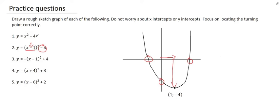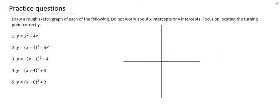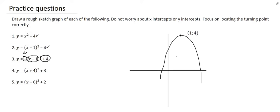For number three, we can analyze the various parts of that equation. We now see that it's a negative, meaning it's going to be an upside-down parabola. It's been shifted one unit to the right because it says minus 1, which means to the right, and it's been shifted four units upwards. We can locate the turning point by moving one place to the right and four units up. There we can see that parabola drawn — it's a sad parabola, shifted one place right and four units up.